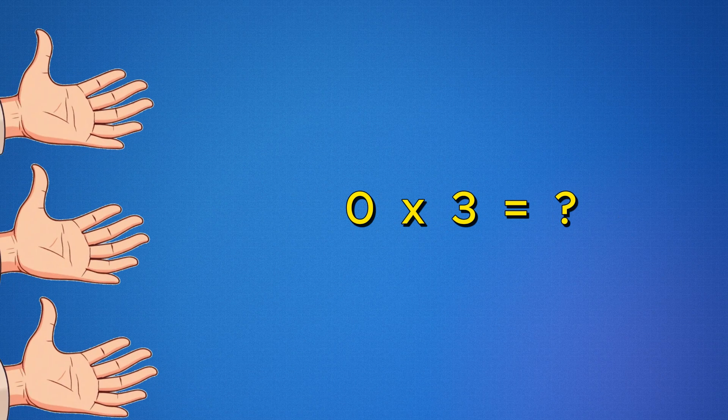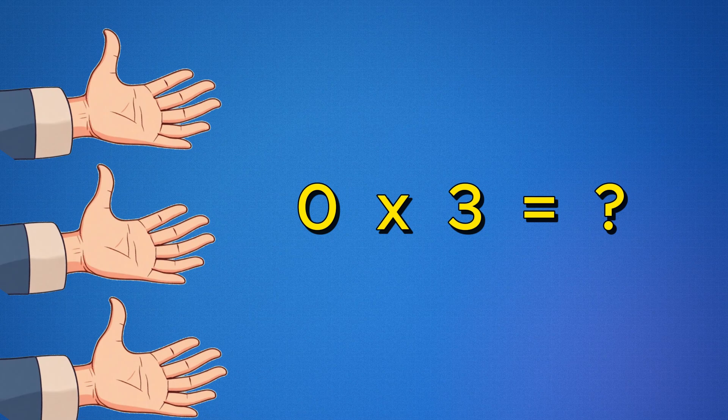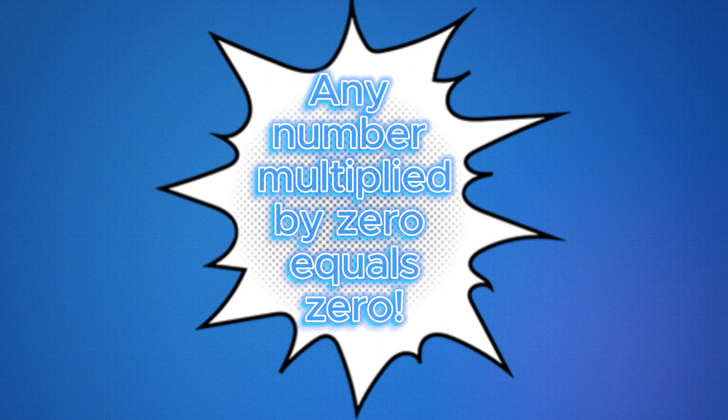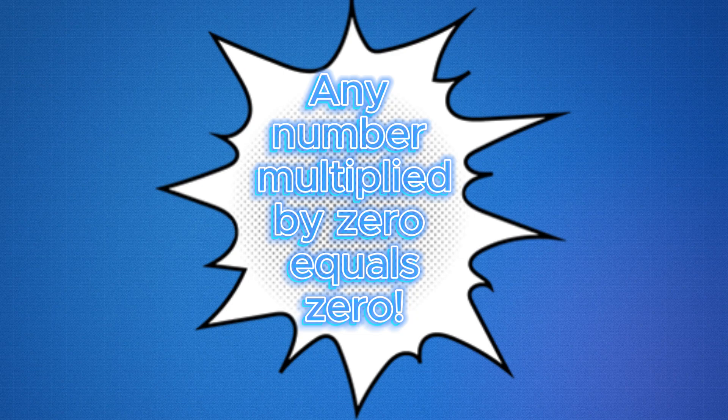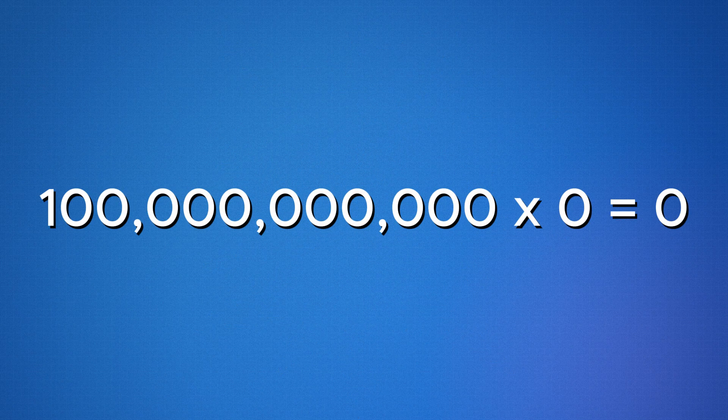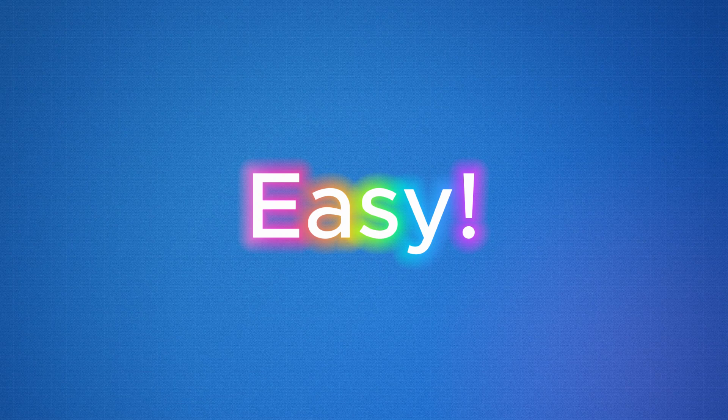What if you have three groups, but zero apples? Each group is receiving nothing. So again, the answer is zero. Any number multiplied by zero will equal zero. It can be 100 billion times zero, and the answer will still be zero. Easy, right?